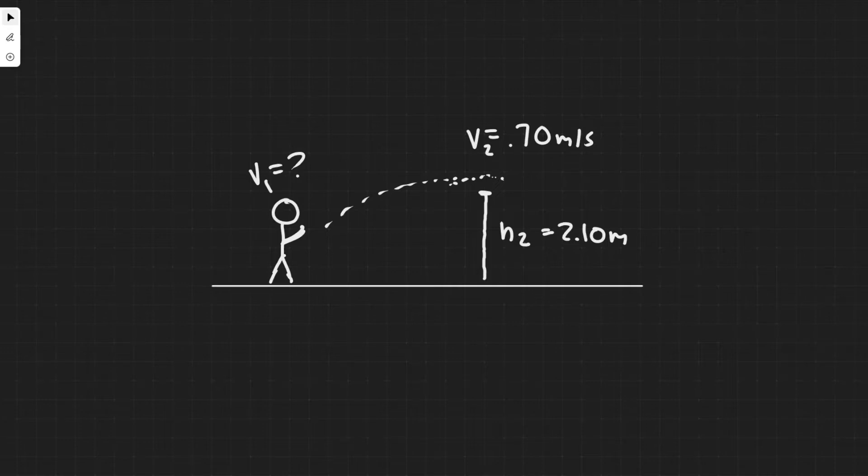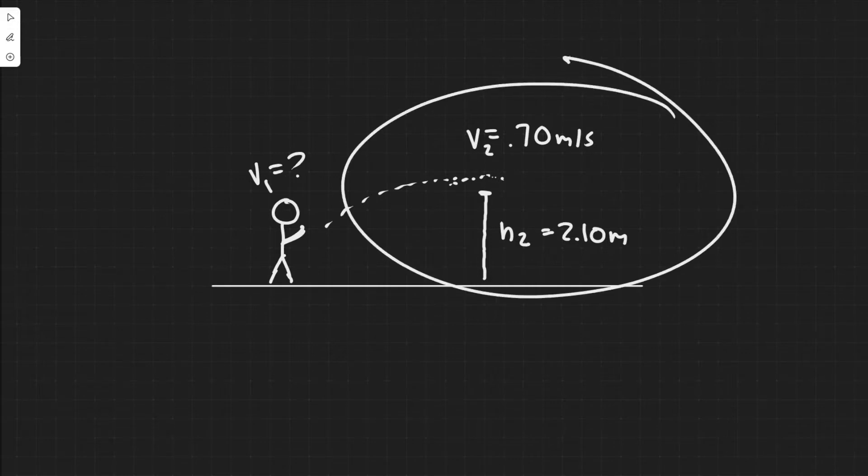So, first thing you always want to do is draw what's going on. We have this high jumper, and we know they're going to jump, and they're trying to cross this height of 2.1 meters, and the velocity is going to be 0.7 meters per second. What we're trying to find is the speed that they're going to have to jump with. What is this minimum speed in order to be able to meet these requirements?